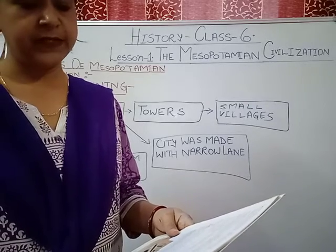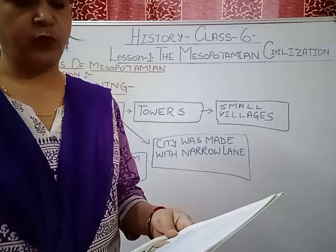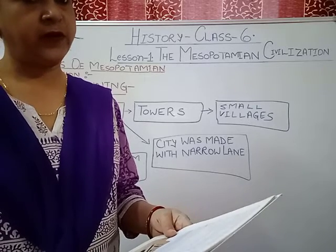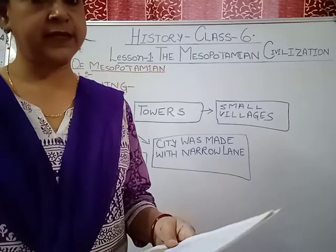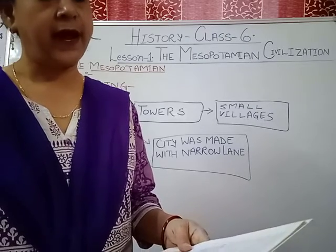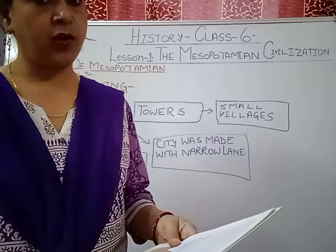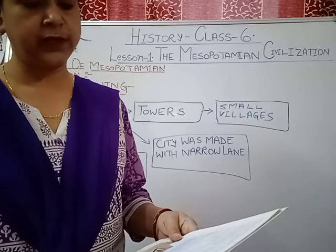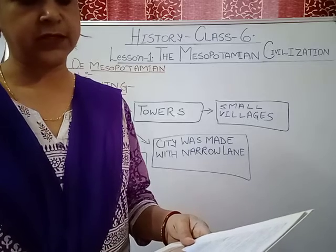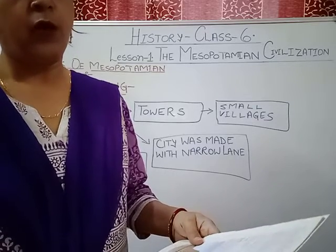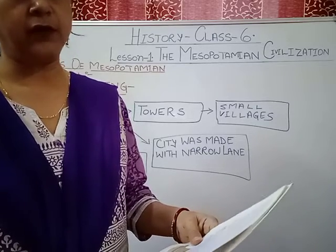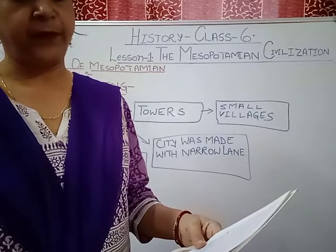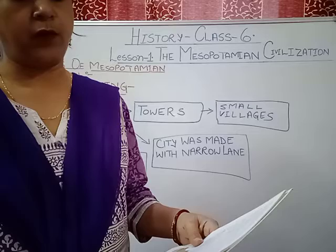Trade: Mesopotamia had a flourishing trade. They traded in wool, cloth, grains, oil, and jewellery. Trade means one person takes goods to another country and sells them. They used a barter system and exchanged these items along with silver, gold, tin, copper, and barley to buy things such as stone, timber, and metal. Trade was carried out with Egypt, Mediterranean countries, and even the Indus Valley. The records of trade were inscribed on clay tablets.